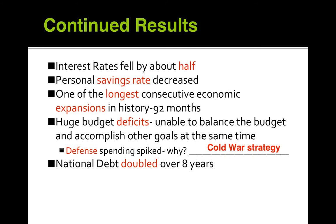Continued results: interest rates fell by about half, and there was one of the longest consecutive economic expansions in history — 92 months long. However, there were huge budget deficits as Reagan was unable to balance the budget, mainly because defense spending spiked due to the Cold War strategy. Reagan was trying to both grow the economy with Reaganomics and defeat the Soviets in the Cold War. The national debt doubled over eight years — a legitimate criticism — though at the same time, gross domestic product increased tremendously.